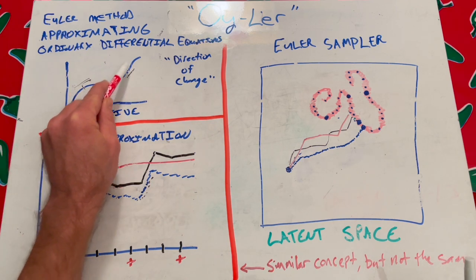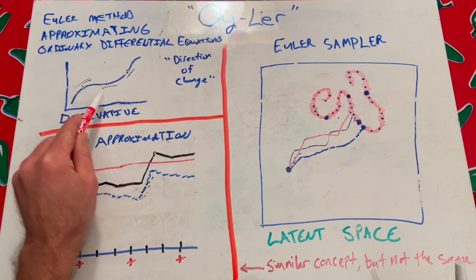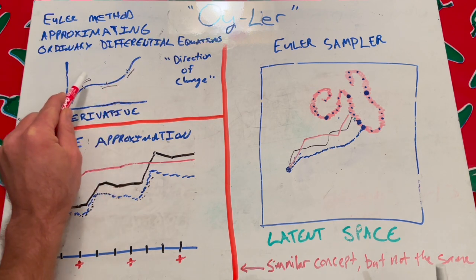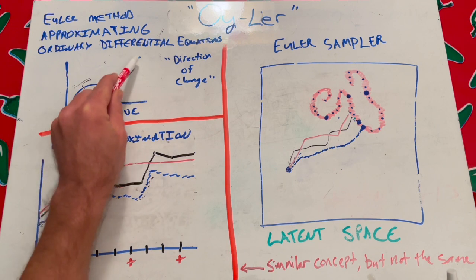So if we actually knew this function, and we were to take the derivative at these points, the direction of change of the function, you can see that if we kind of connected those together, we could approximate the function.